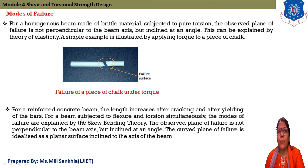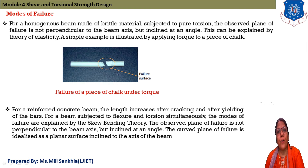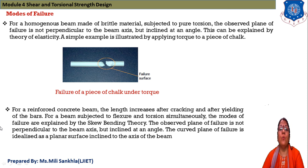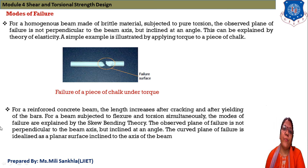For a reinforced concrete beam, length increases after cracking and after yielding of bars. For a beam subjected to flexure and torsion, the modes of failure are explained by the skewed bending theory. The observed plane of failure is not perpendicular to the beam axis but inclined at an angle. The curved plane of failure is idealized as a planar surface inclined to the axis of the beam.